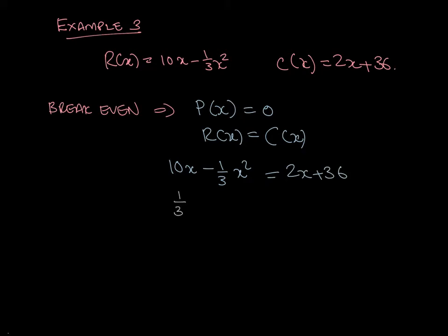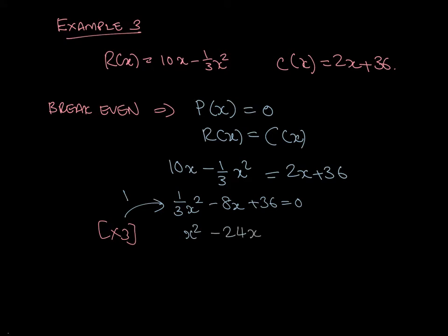Once I group all the terms, I get 1/3 x squared minus 8x plus 36 equals 0. I'm going to multiply all of this by 3 to make the leading term 1. So I get x squared minus 24x plus 108 equals 0.